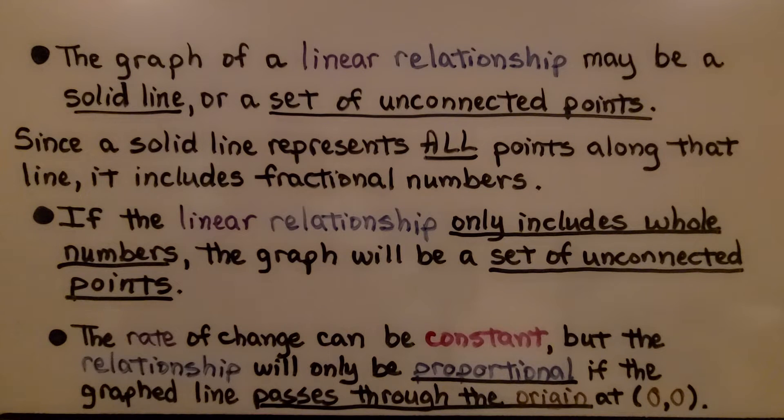The graph of a linear relationship may be a solid line or a set of unconnected points. Since a solid line represents all points along that line, it includes fractional numbers. If the linear relationship only includes whole numbers, the graph will be a set of unconnected points, no line. The rate of change can be constant, but the relationship will only be proportional if the graphed line passes through the origin at (0,0).